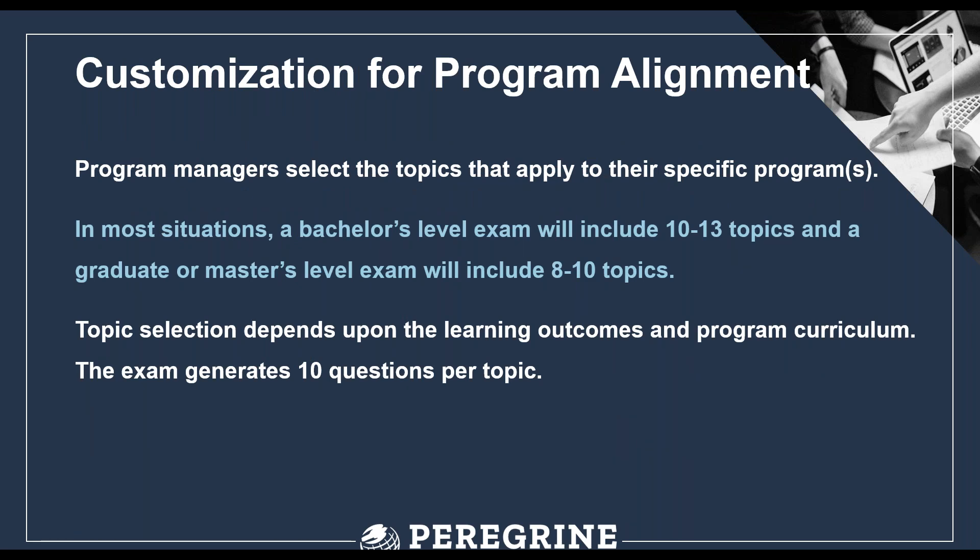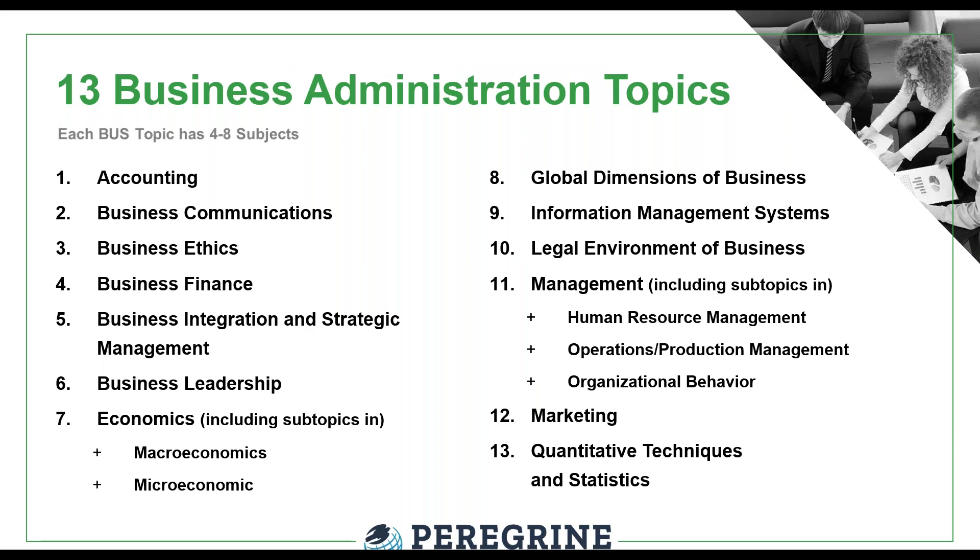Customization of the assessment exam for program alignment is done by program managers, directors, or department chairs, who select the topics that apply to their particular program. A bachelor's level exam typically includes 10 to 13 topics, and a graduate or master's level exam will have 8 to 10. Topic selection depends on your learning outcomes and program curriculum content. Each exam offers 10 questions per topic, so a 13-topic exam yields 130 questions, and an 8-topic exam yields 80 questions.